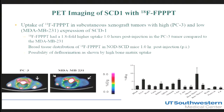Since both radiotracers behaved similarly in vitro, I chose to proceed with FPPT because it was easier to synthesize and purify. To differentiate between high and low expressing tumors, I used a mouse xenograft model with PC3 cells, which have high SCD-1 expression and grow easily, and MDA-MB231 as the negative control. After intravenous injection of F-18 FPPT and imaging one hour later, the images clearly show a difference in uptake between the SCD-1-positive and negative tumors, indicated by the white arrows.